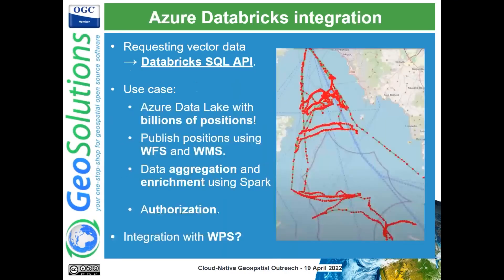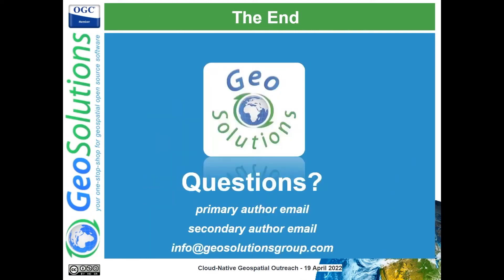Another interesting integration that is growing — though not yet in source because it's an early prototype — is a connection to Azure Databricks, leveraging the Databricks SQL API so that GeoServer can pick up data stored in data lakes. In this use case we have the position of vessels and ships around Europe with several years of history — we're talking about billions of positions — being published through WMS and WFS. We're also using Spark to aggregate and enrich them into trajectories and correlate the trajectories of multiple ships.